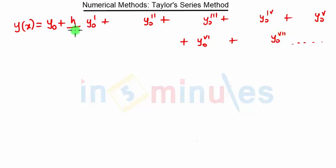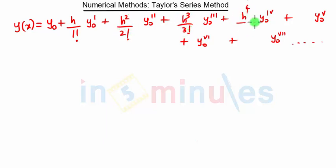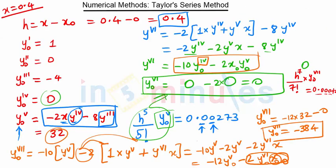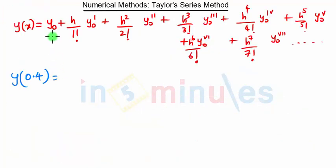The terms are multiplied by h upon 1 factorial, h squared upon 2 factorial, h cubed upon 3 factorial, h raised to 4 upon 4 factorial, h raised to 5 upon 5 factorial, h raised to 6 upon 6 factorial, and h raised to 7 upon 7 factorial. Now we need to find the value of y at x equal to 0.4.